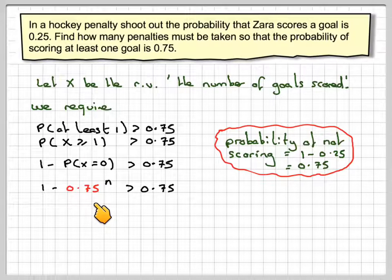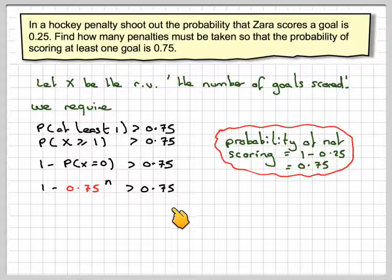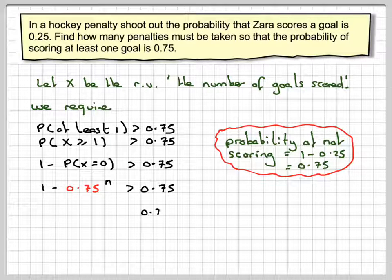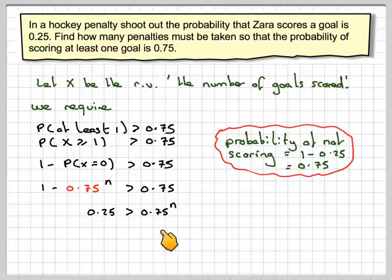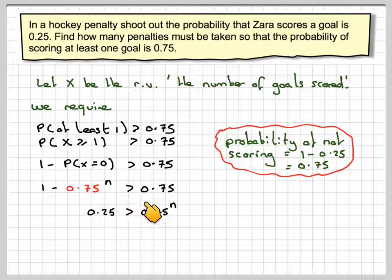So we need 1 minus 0.75 to the power of n is bigger than 0.75. So doing a little bit of rearranging, we will have that 0.75 to the n is less than 0.25.